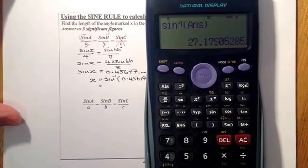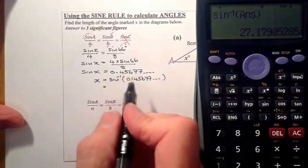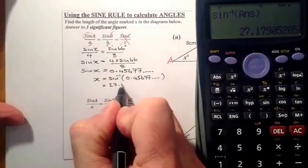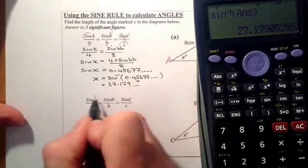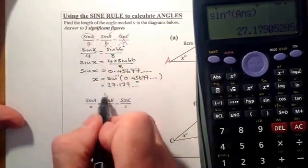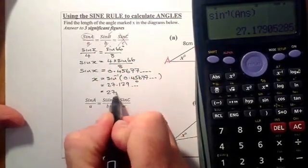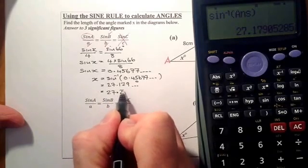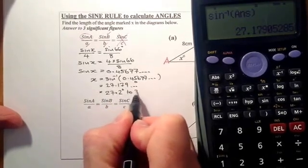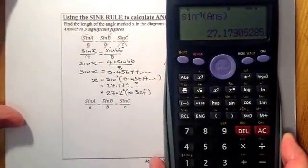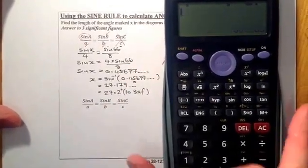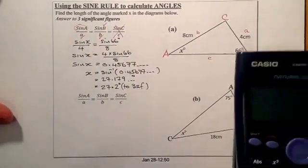That gives me the angle I'm looking for. So that's 27.179 degrees. I have to round it to three significant figures, so I've got 27.2 degrees to three significant figures. That's the first example completed.